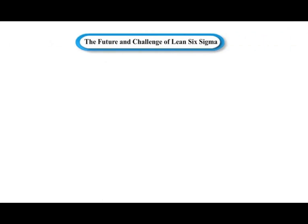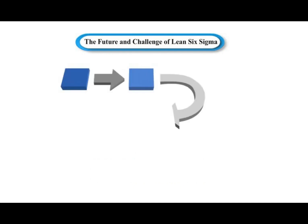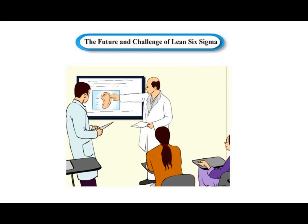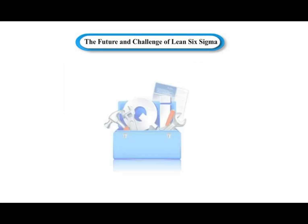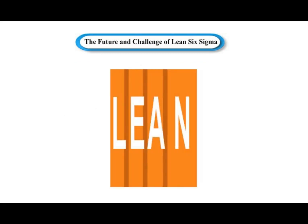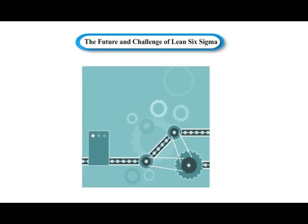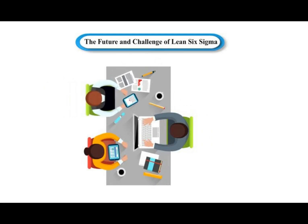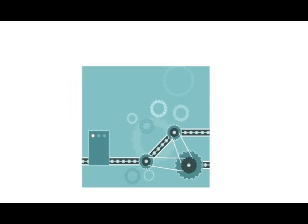Six Sigma brought a more structured problem-solving approach, the mentoring and training focus of the belt structure, and a broader toolkit of tools. Lean and Just-In-Time broadened the spectrum to include more of the supply chain elements. The three streams of quality, productivity, and information technology have integrated over the last few years into Lean Six Sigma supply chain, with many variations.